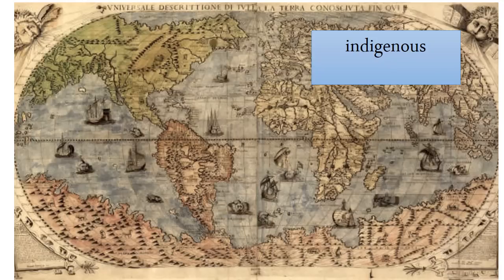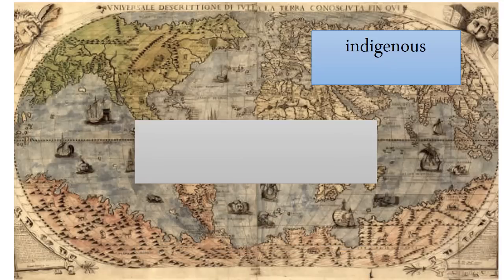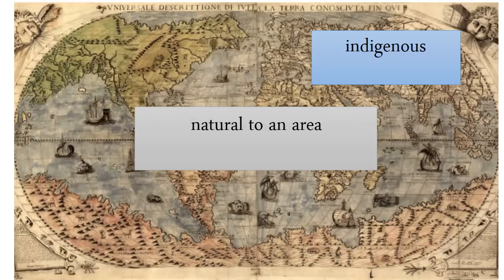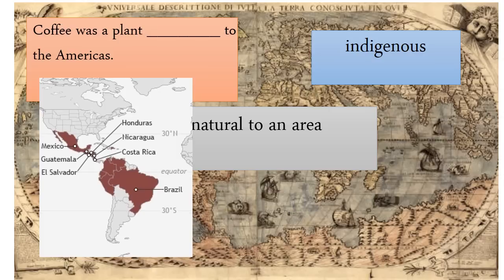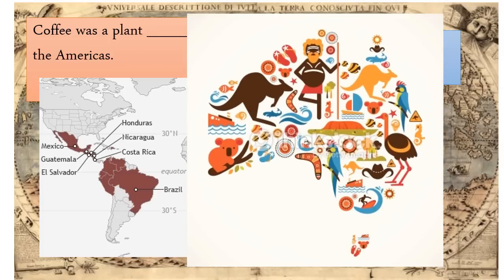Indigenous is another word that you need to be familiar with. Indigenous means natural to an area. It's a describing word, so we can use indigenous with things as well as people. Here's an example sentence. Coffee was a plant indigenous to the Americas. You can see this map here of where coffee is grown. So indigenous coffee. We can also think of indigenous people and indigenous animals.